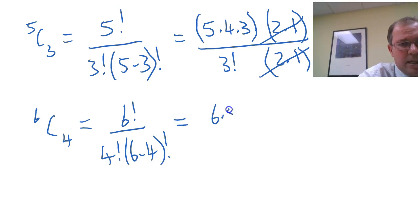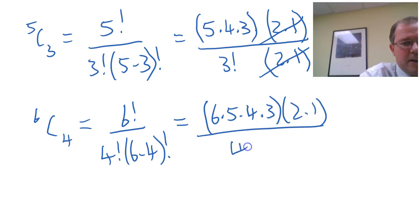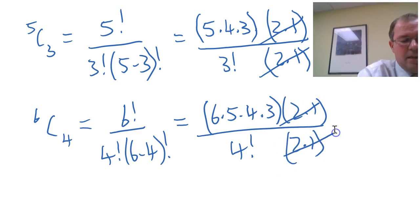Let's rewrite this out. Now, 6 times 5 times 4 times 3, I'll put a bracket around that, times 2 times 1 over 4 factorial. I'm going to leave that. 6 minus 4 is 2, 2 factorial is 2 times 1. And again, they cancel, leave me with 6 times 5 times 4 times 3 over 4 factorial.